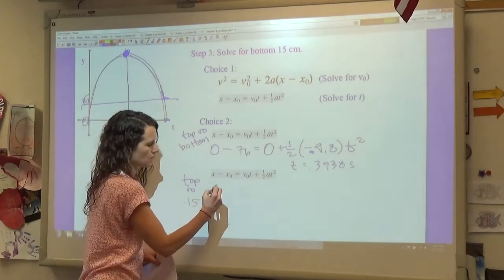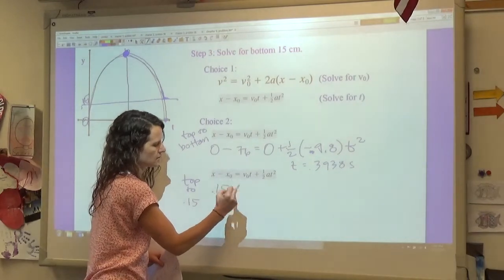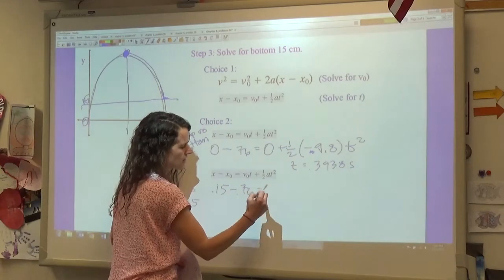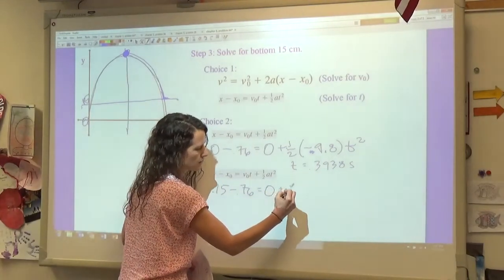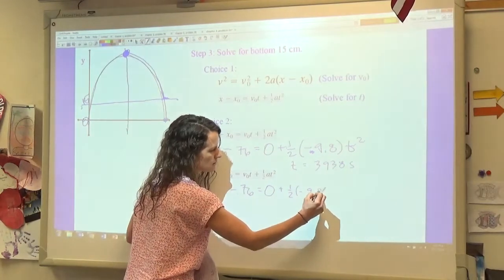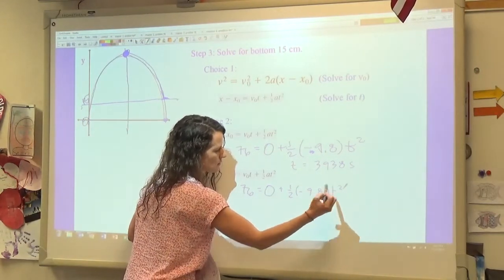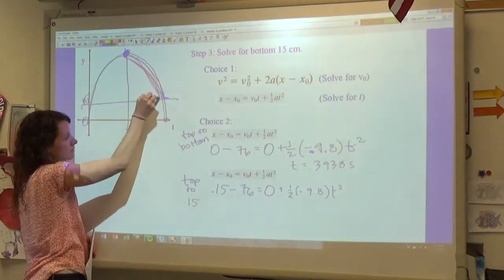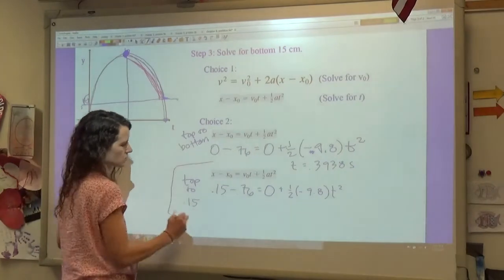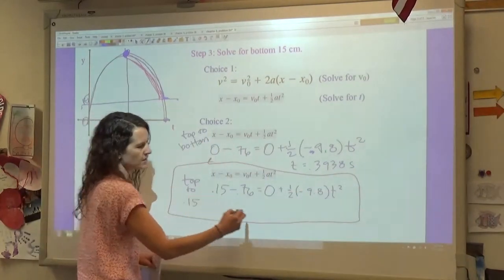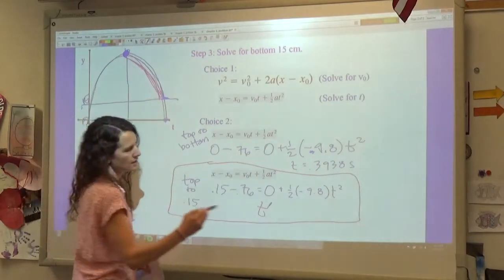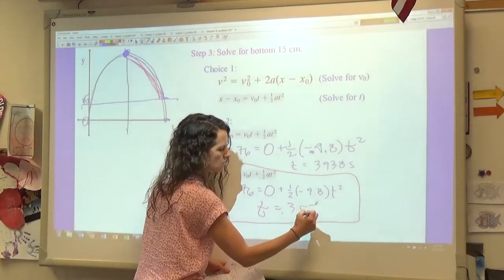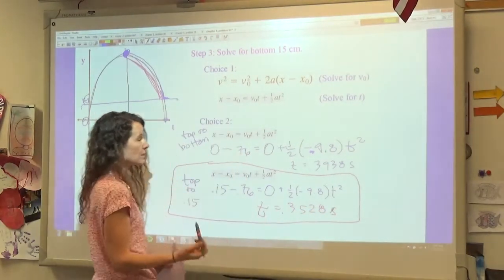So next I will solve from the top to 15 centimeters. And so my final x is going to be 0.15, my initial x is still up here, 0.76, and then my initial velocity again is zero, plus 1/2 negative 9.8 t squared. So this is from the top to here, so I'll put a little pink circle around it so we know that's what we're talking about. And so I find out that my time for this portion of it is going to be 0.3528 seconds.